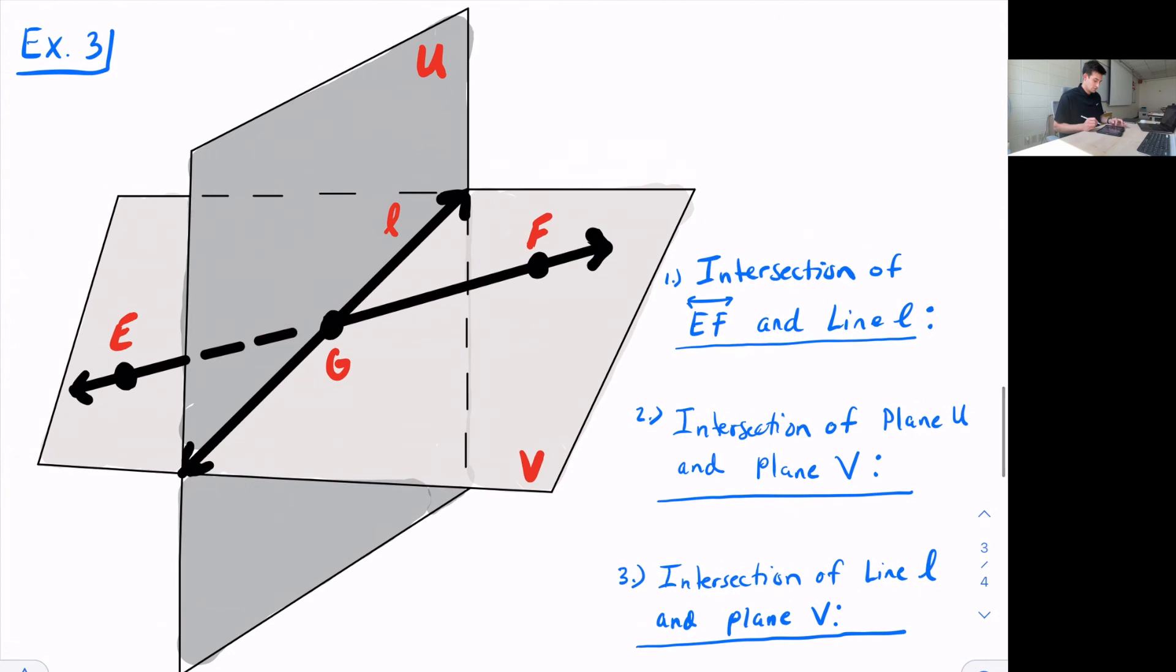So let's look at our last example. We have plane U and plane V that are intersecting. So number one says, what is the intersection of line EF and line L? Well, we notice that they intersect at point G, because two lines intersect at a point.